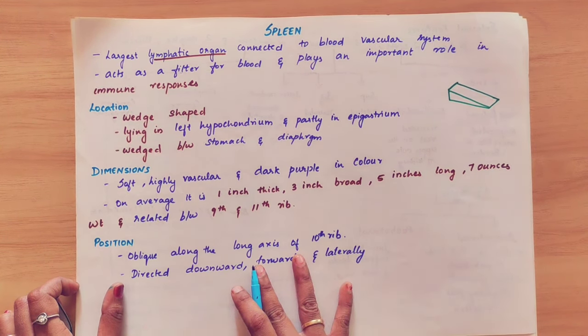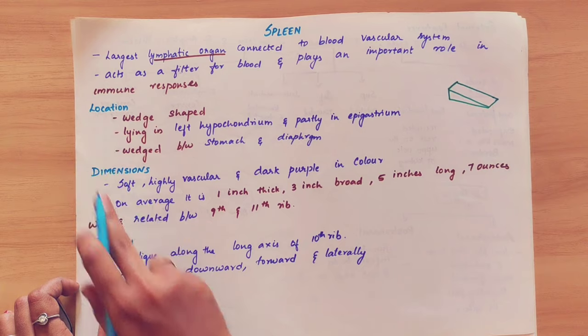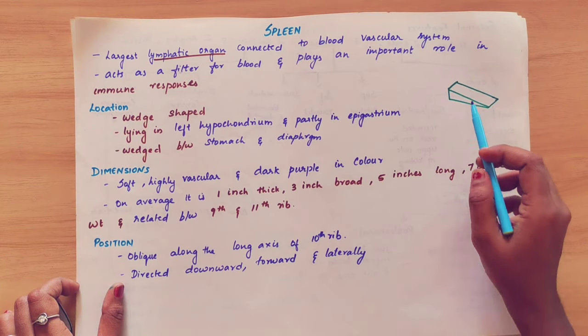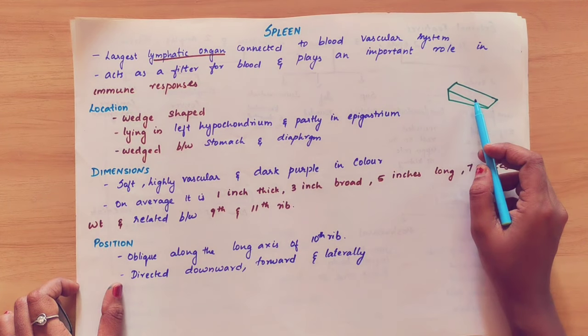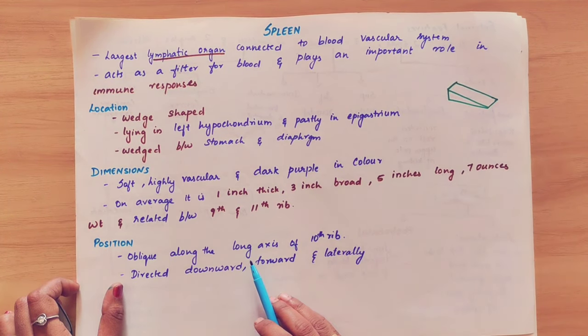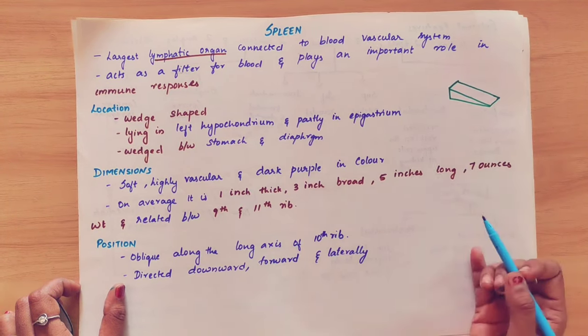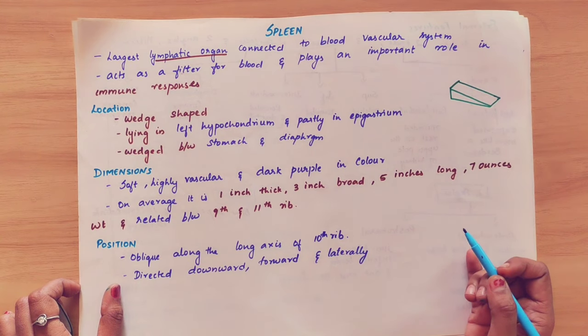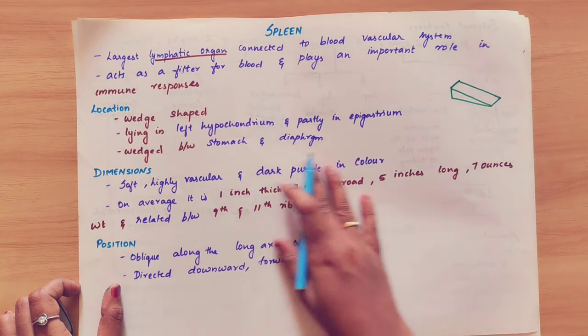This is all about the introduction. Coming to the location: the spleen is a wedge-shaped organ lying in the left hypochondrium and partly in the epigastrium.